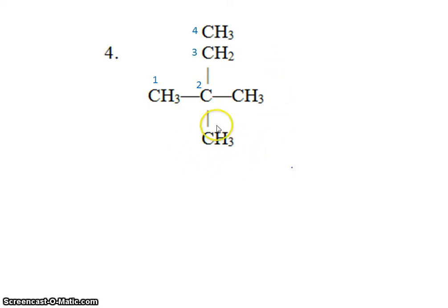This gives these two substituents, which are both methyl groups, the lowest possible number. They'll be bonded to the second carbon. So two methyls bonded to the second carbon will be 2, 2-dimethylbutane.